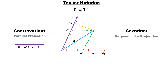Thus, if the vector is covariant, it is represented as a-sub-1 times e-sub-1 plus a-sub-2 times e-sub-2, where a-sub-1 and a-sub-2 are the perpendicular projections of the vector. These are called covariant components.